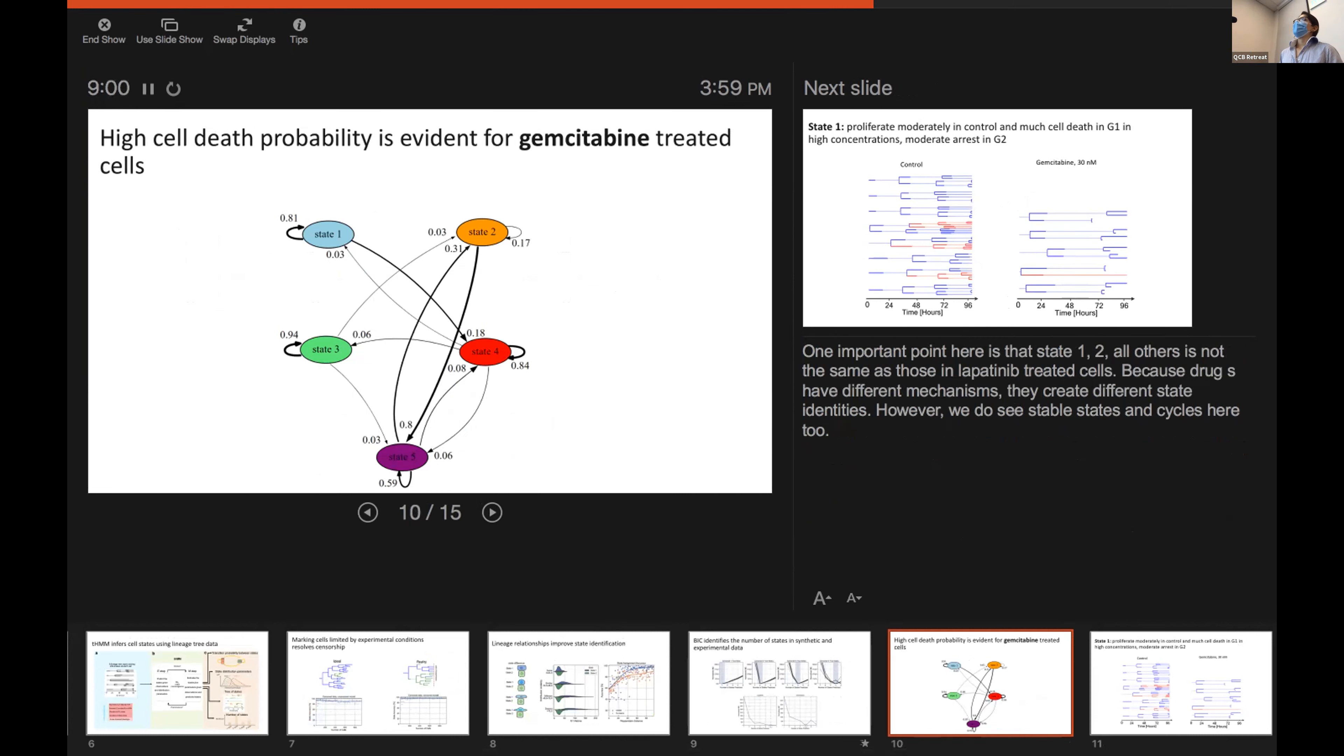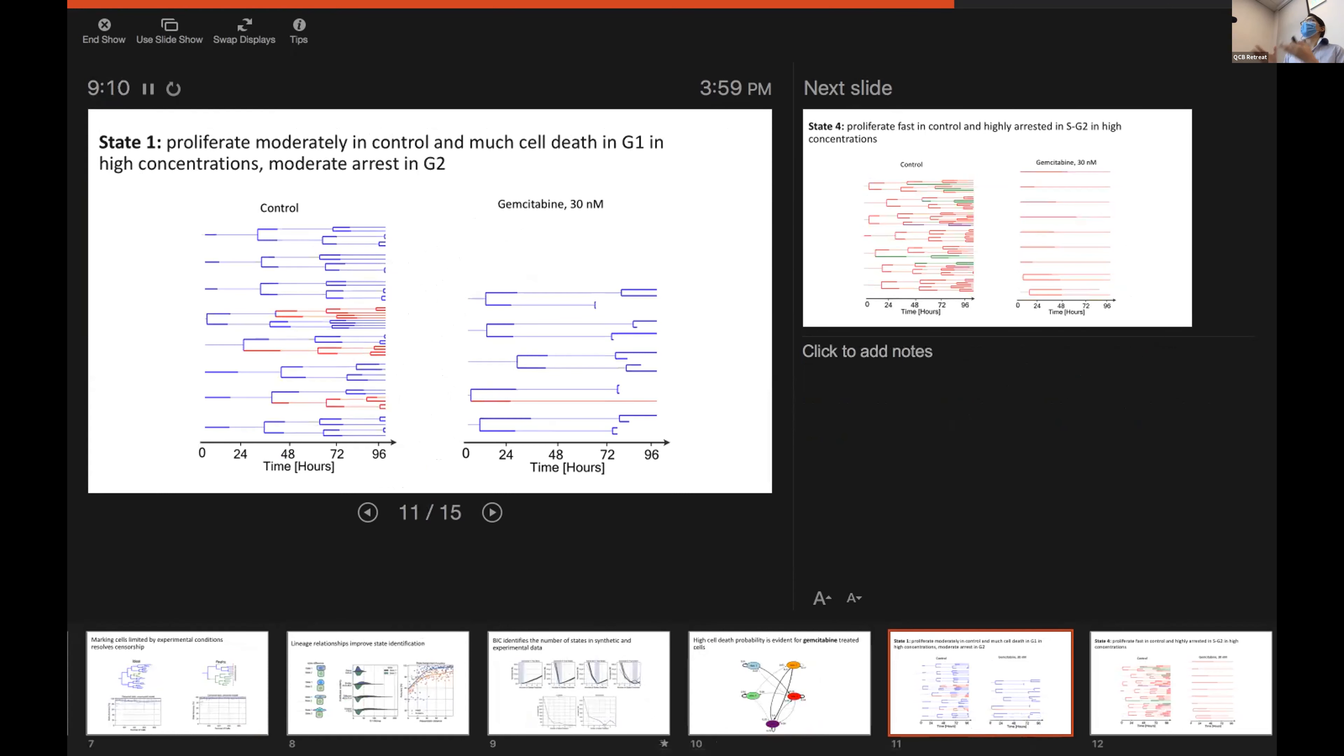In these five states, we see that we could have stable states, like state four, as well as cycles. So, in order to go in more depth, we could look at the single-cell state assignments.